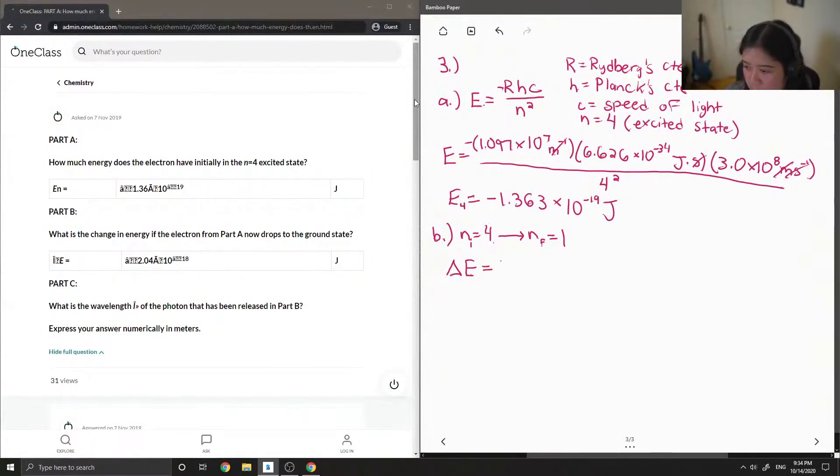is equal to the same constants RHC and then in brackets you have 1 over N squared of your final minus 1 over N squared of your initial energy states. Okay, so again, I'm just going to plug in all these values